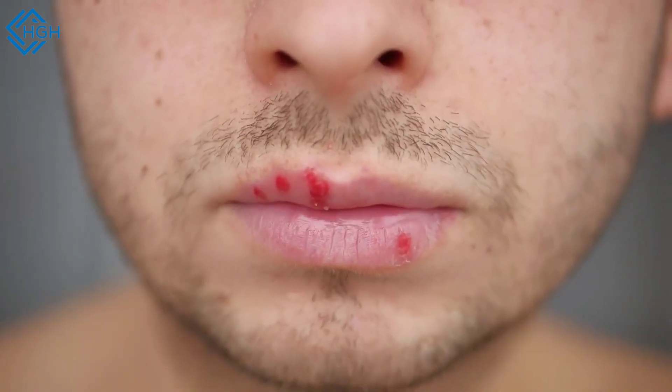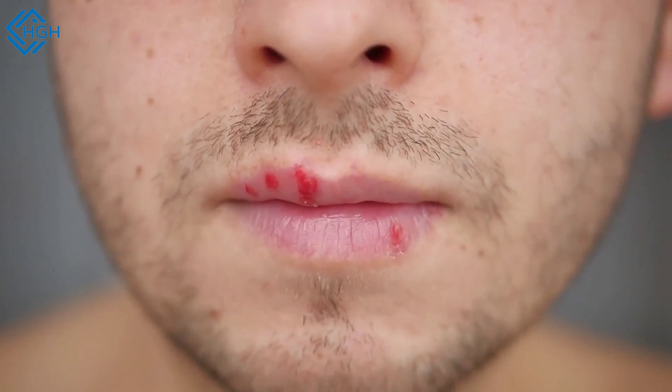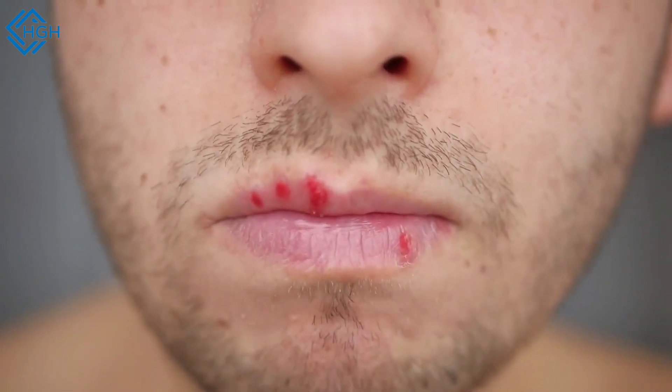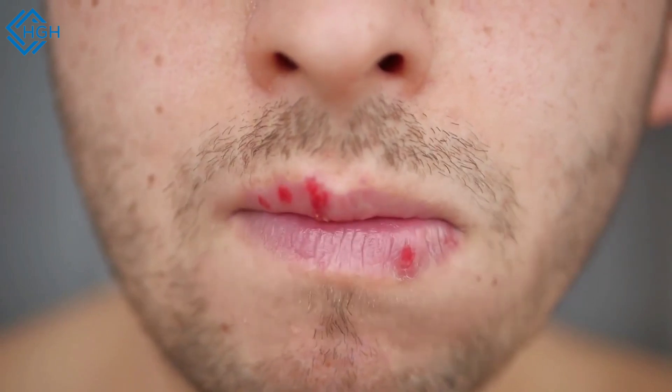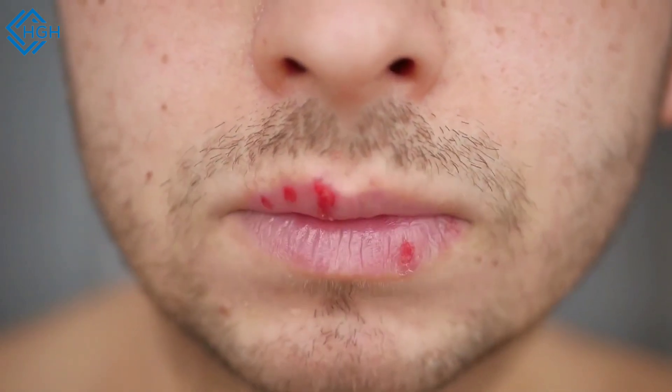Swollen and bleeding gums, one of the classic signs of scurvy is swollen, bleeding gums. The gums might become tender and easily bleed even with minor irritation or brushing.